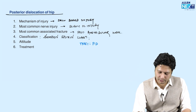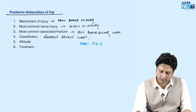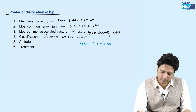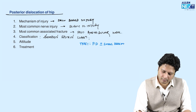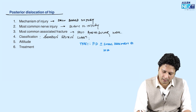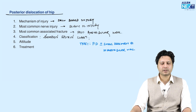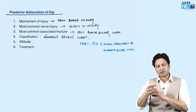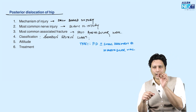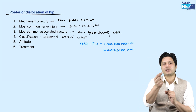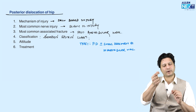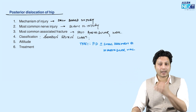Type 1 is posterior dislocation with or without a small fragment fracture in the acetabular wall. That means there is a posterior dislocation even without a fracture, or if there is a fracture, it is just a small avulsion fragment fracture in the posterior wall of the acetabulum.